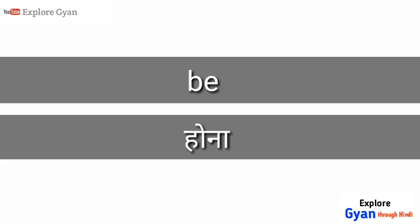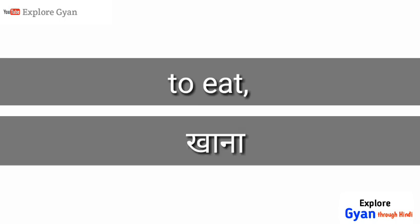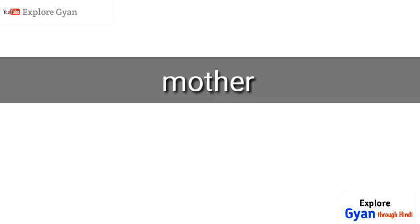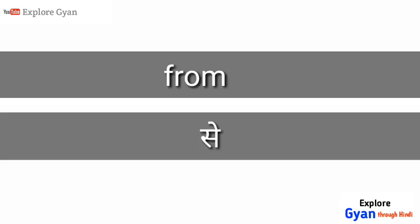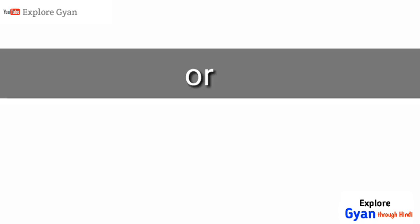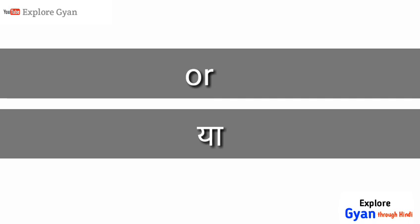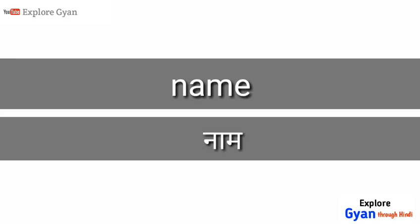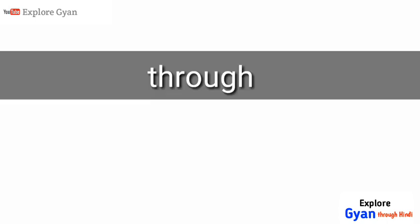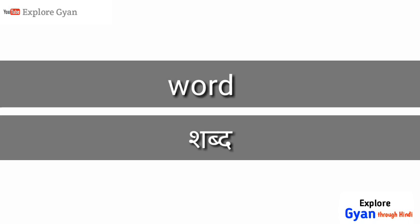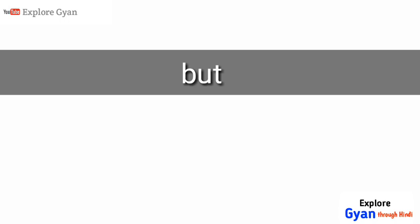'Be' - hoona. 'To eat' - khaana. 'Mother' - maa. 'Or' - ya. 'Name' - naam. 'Ready' - tayyar. 'Home' - ghar. 'Through' - dwara. 'Word' - sabd.